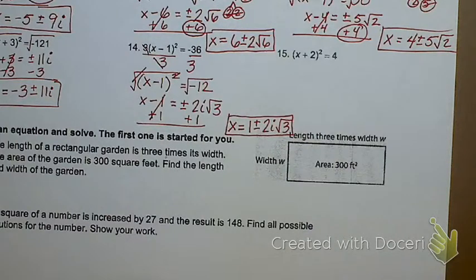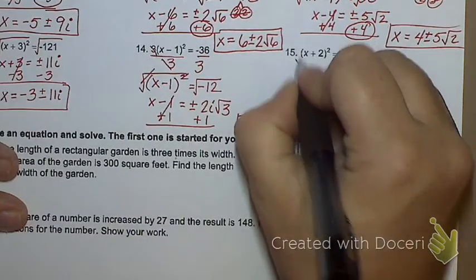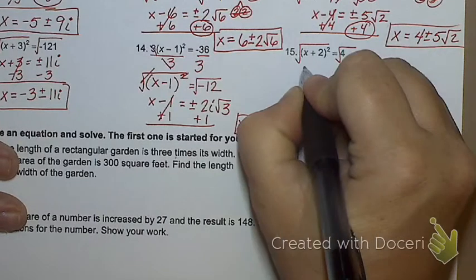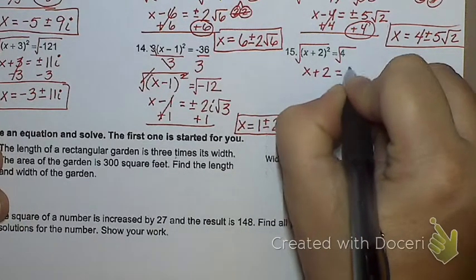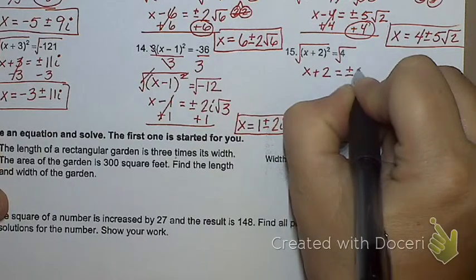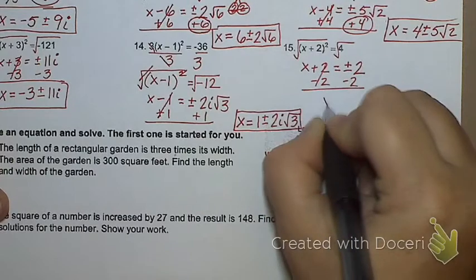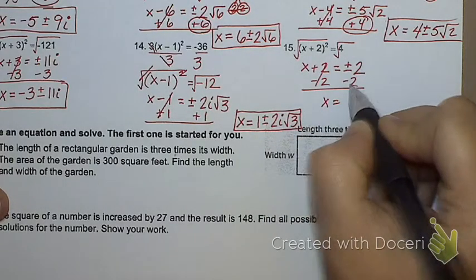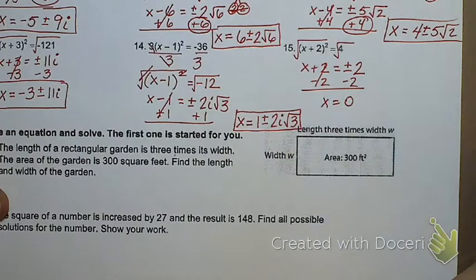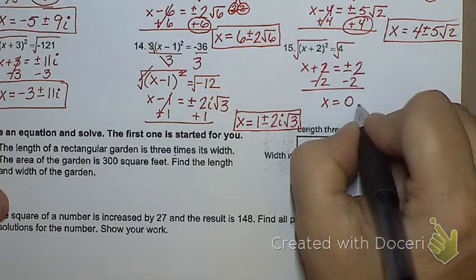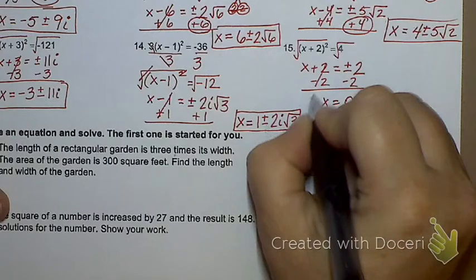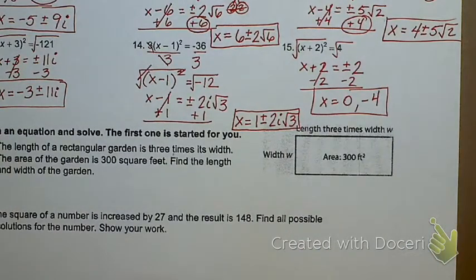So plus or minus 2i rad 3. Last thing right here, add 1 plus 1. So what is my ugly answer? It is 1 plus or minus 2i radical 3. That is the absolute hardest I could possibly make these right now. And then number 15 should be a piece of cake after that. I'm going to square root both sides. So I get x plus 2 equals positive and negative 2. Subtract 2. So I get x equals. What is positive 2 minus 2? Zero. What's negative 2 minus 2? Negative 4.